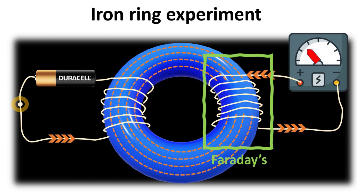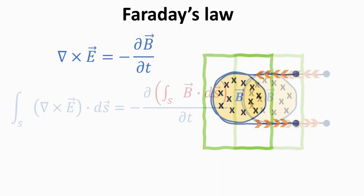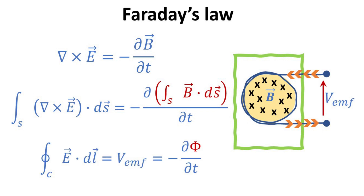Faraday's discovery was found on the right coil circuit: turning on the left circuit produces a momentary current in the right circuit, and an opposite-flowing momentary current when the left circuit is turned off. The Faraday's law embodies what happened on the right side of the circuit. Taking a surface integration of Faraday's law over the cross-section of the coil, the magnetic flux density integrated over the cross-section yields the total magnetic flux Φ. Stokes' theorem allows us to write the integral of the curl of E as a line integral of E enclosing the surface, which is the definition of voltage over a closed path — the electromotive voltage responsible for driving the instantaneous current through the right coil.